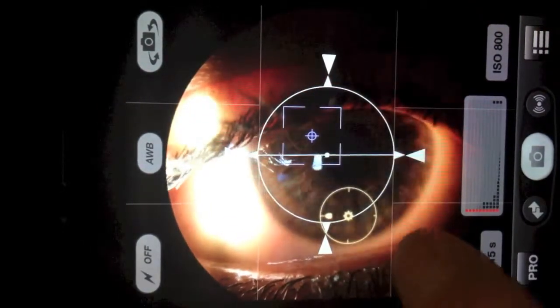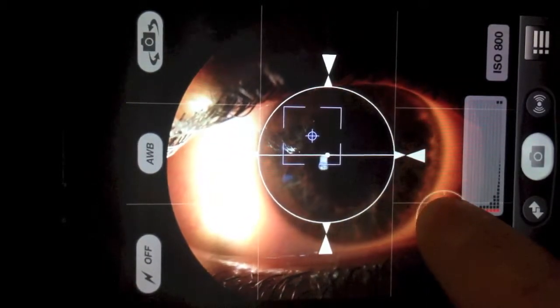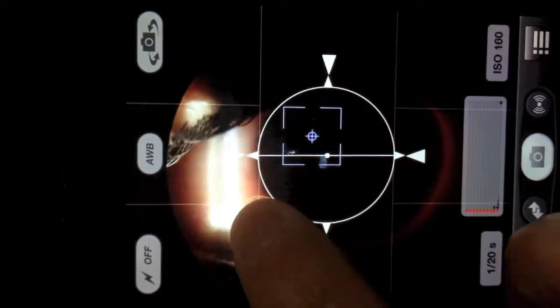Fourth, optimize the lighting by moving the yellow exposure circle left and right.